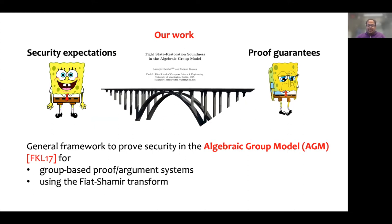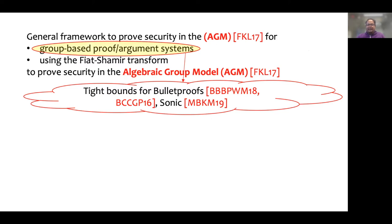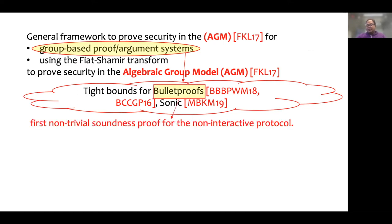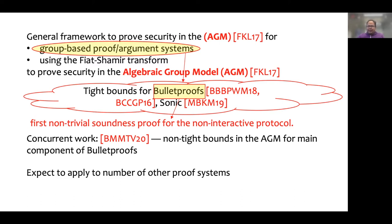The goal of our work is exactly to narrow this gap. We do this by giving a general framework to analyze security in the algebraic group model for group-based protocols that use the Fiat-Shamir transform. Our framework captures protocols instantiated in groups with or without pairings. We apply our framework to obtain tight security bounds for the non-interactive version of bulletproofs and Sonic. For bulletproofs, this is the first non-trivial soundness guarantee for the non-interactive argument ever proved in any model. In concurrent work, Bunz et al. analyze the non-interactive version of the main component of bulletproofs in the AGM, however the bounds they obtain are not tight. We also expect our framework to be more widely applicable to a number of other proof systems, but leave that for future work.